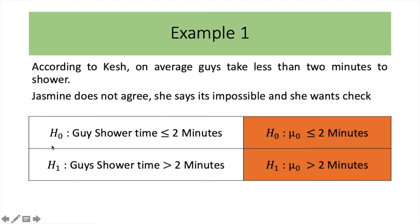So your H0 will be, guys' shower time is less than or equal to 2 minutes. The alternative H1, which Jasmine wants to test is, guys' shower time is greater than 2 minutes.